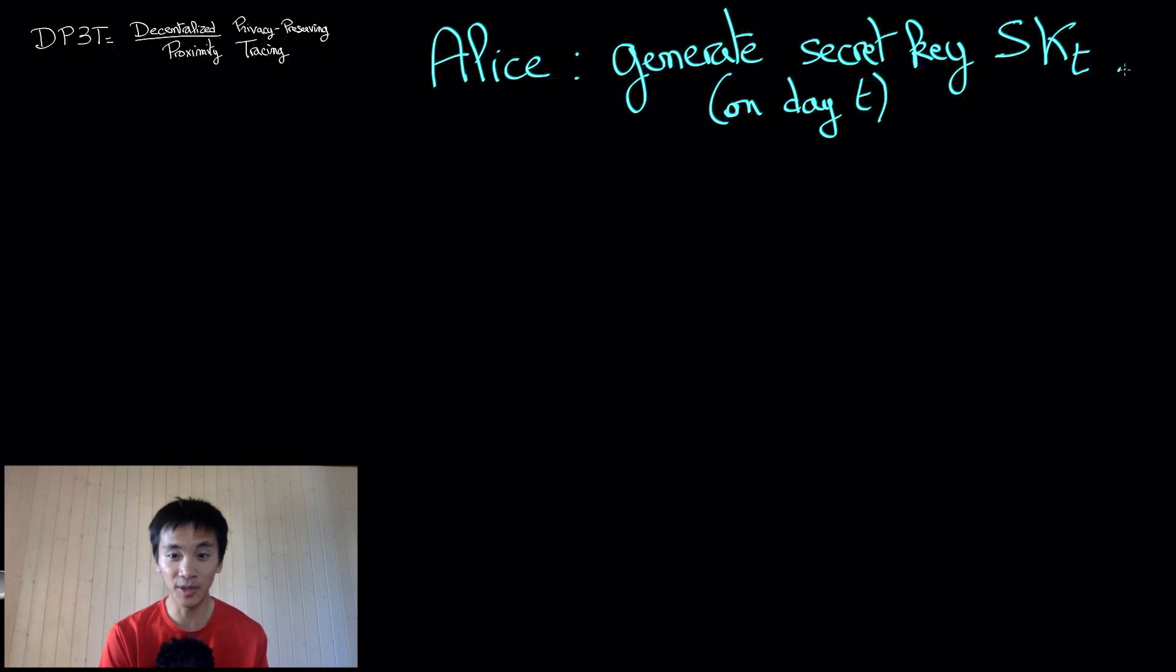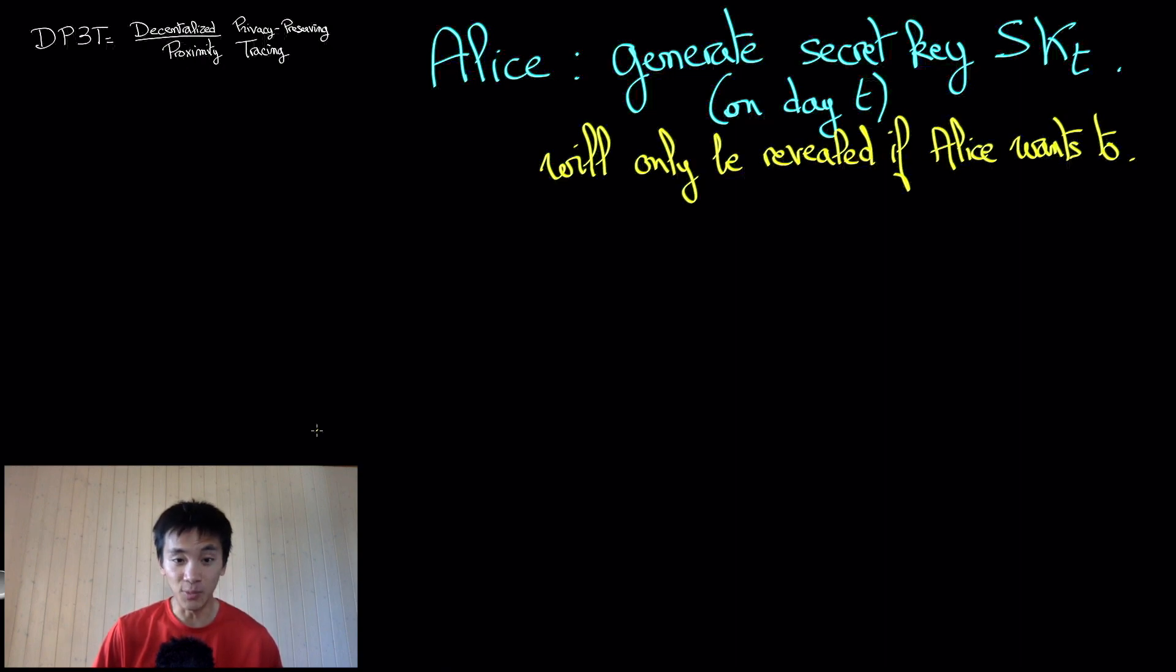If Alice generated her secret key on date T, this secret key will be denoted SK. Unless Alice is later tested positive to COVID-19 and wants to reveal SK to alert other users that they may be at risk, the secret key SK will remain secret. And even in the case where SK is revealed, Alice's identity will not be revealed. Only her secret key will be revealed. This is what protects the privacy of Alice, though there are caveats to this that we will discuss in a future video.